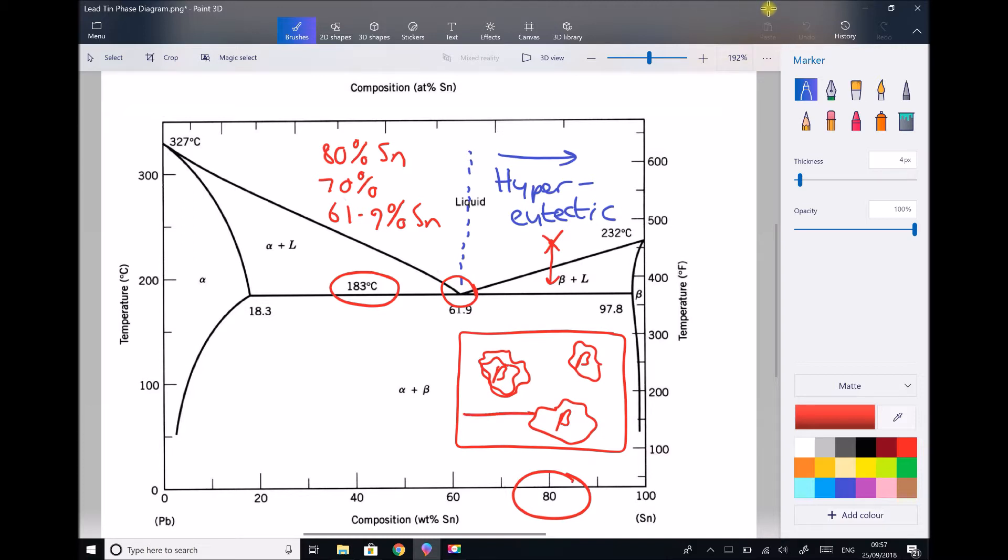So once again, we'd get our layering. Our layering would consist of layers of alpha plus beta in alternate layers, our laminar structure here.